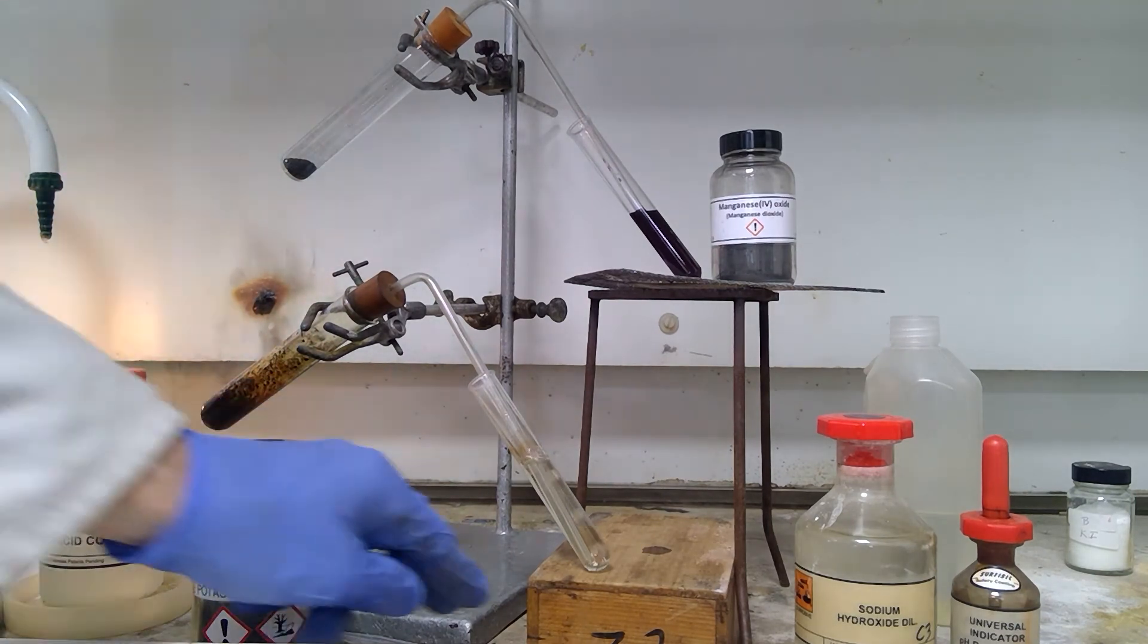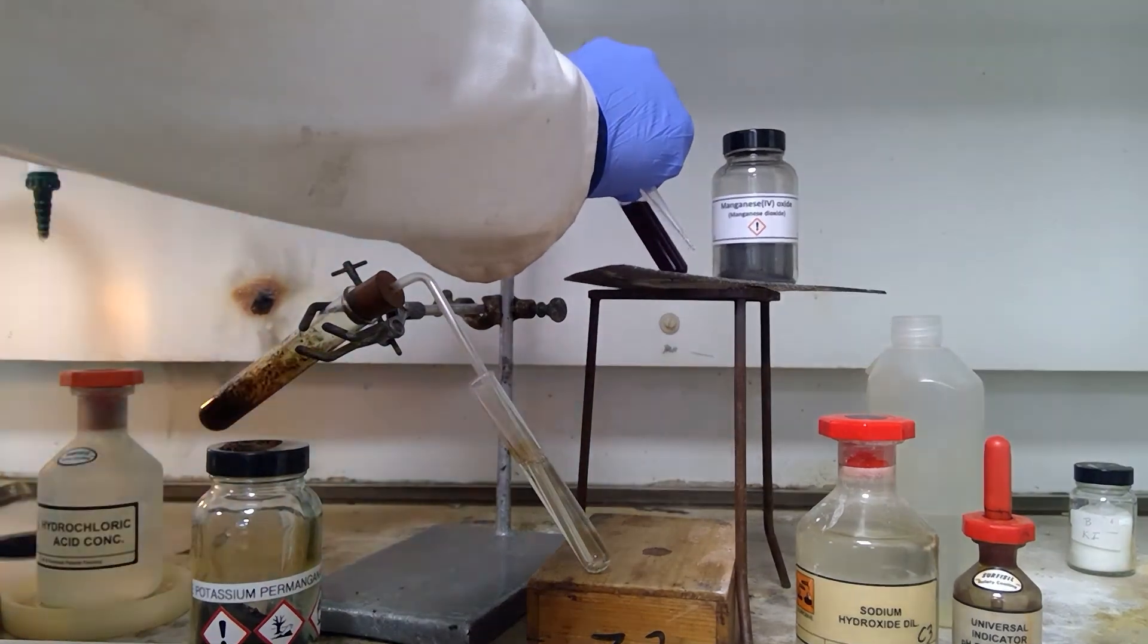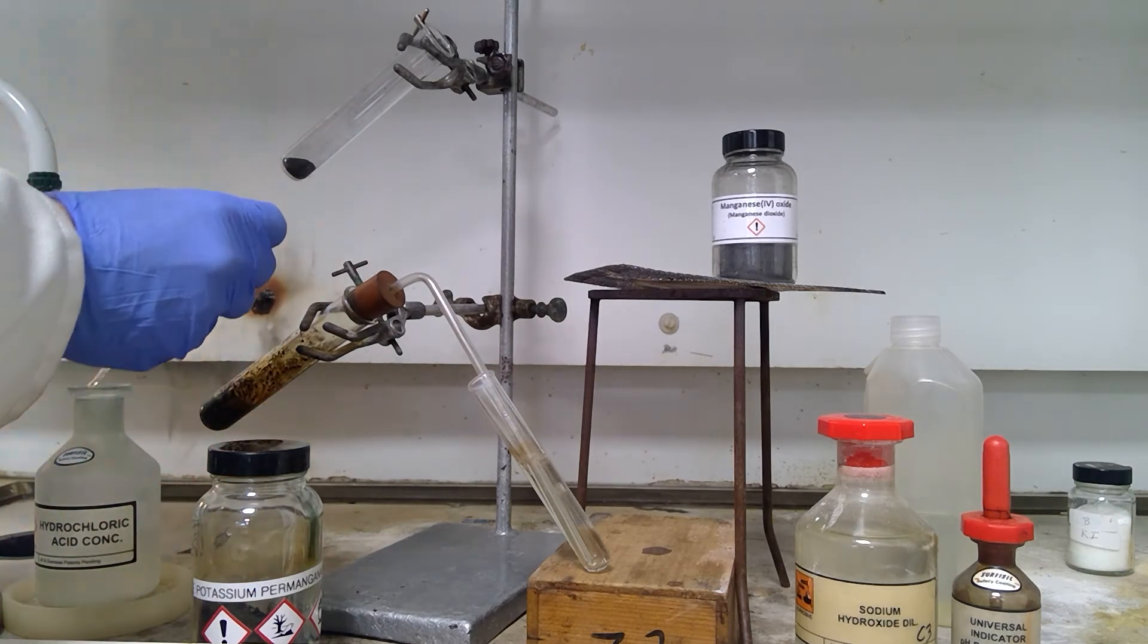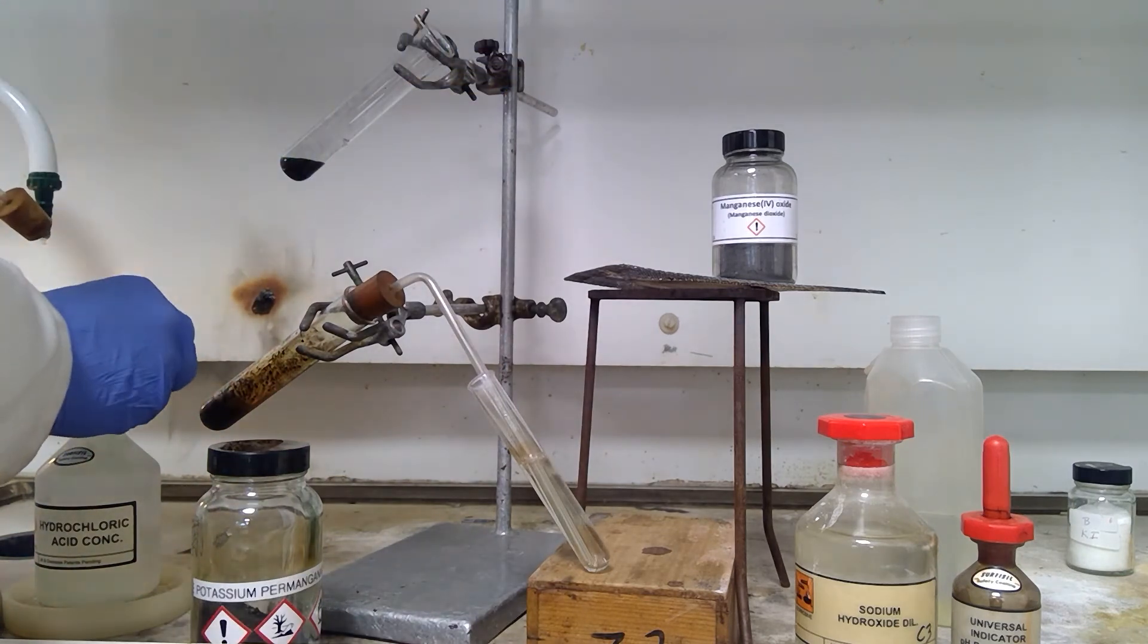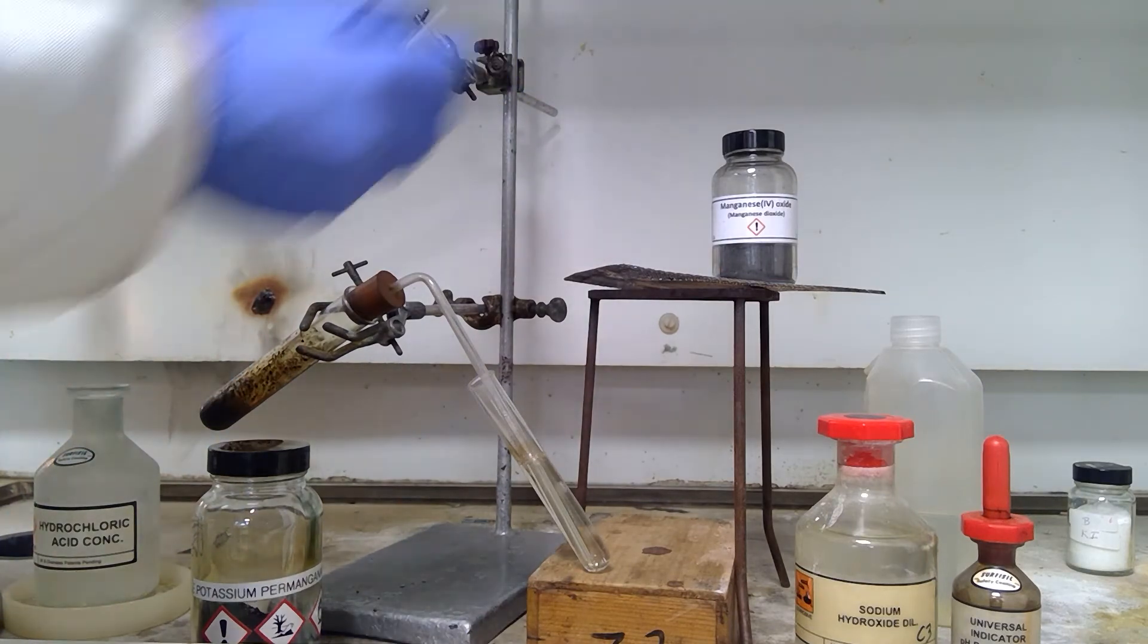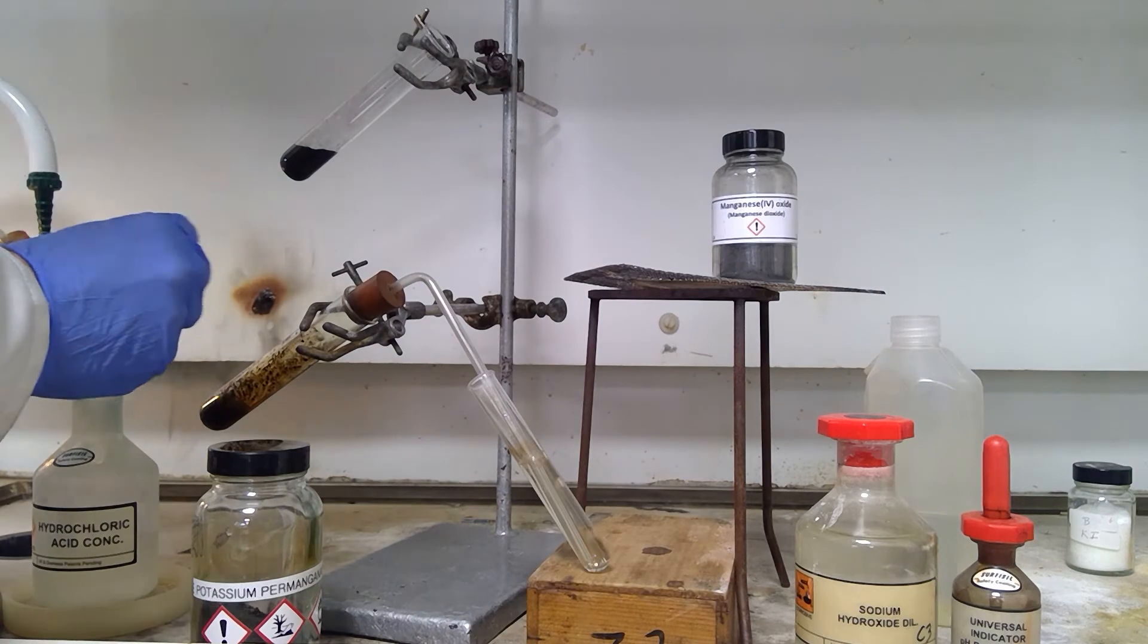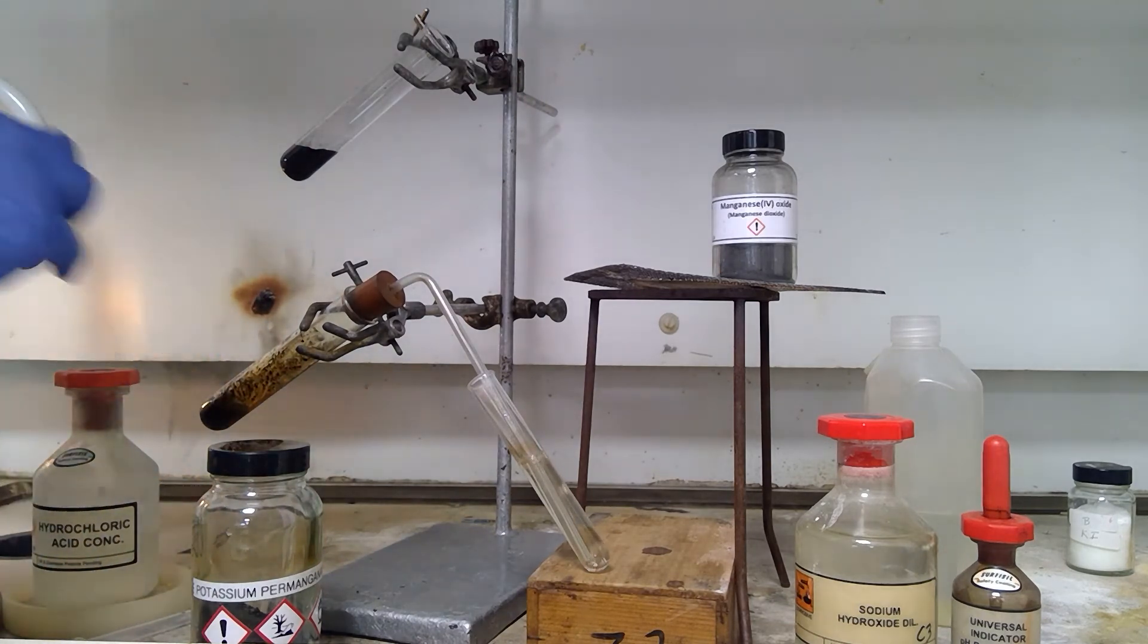If we compare this then with the reaction that we can do with manganese 4 oxide, we do the same thing. So I will put 3 cm³ of the concentrated hydrochloric acid into this one. You may already be able to see that the reaction is a lot slower, and indicates the relative strength of the oxidizing agent, manganese 4 oxide, in comparison to the permanganate.